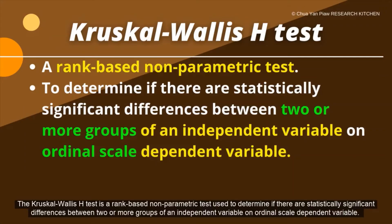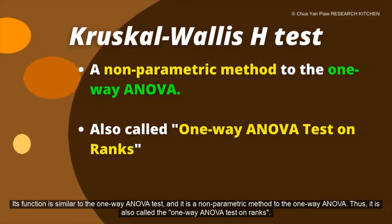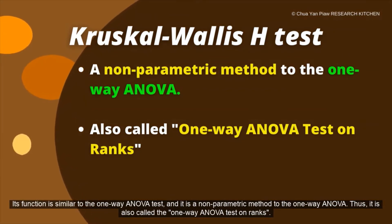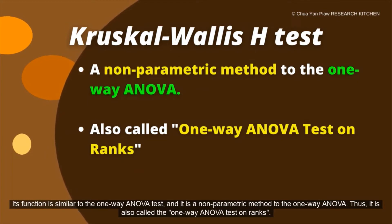The Kruskal-Wallis H test is a rank-based non-parametric test used to determine if there are statistically significant differences between two or more groups of an independent variable on an ordinal scale dependent variable. Its function is similar to the one-way ANOVA test, and it is a non-parametric alternative to the one-way ANOVA. Thus, it is also called the one-way ANOVA test on ranks.